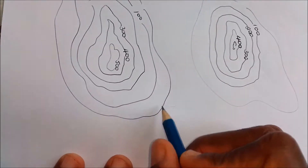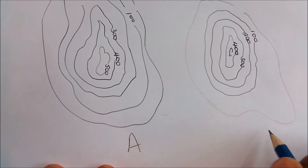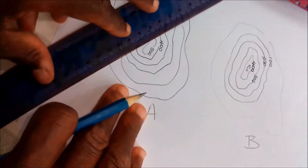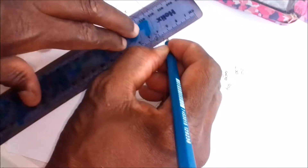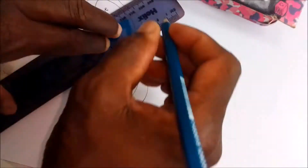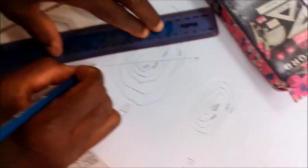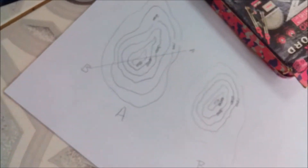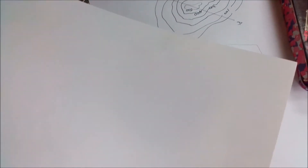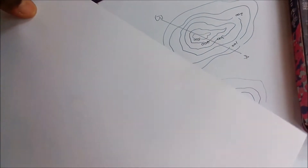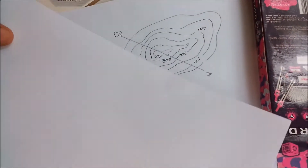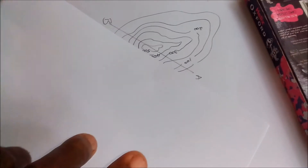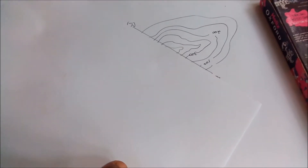Let's call this section A and let's call this section B. I want a cross-section from point A to point B. To do that, first I need to get a piece of paper and place it along the line. The geometry set is here to stop the breeze from blowing up the paper. Then I draw the line.